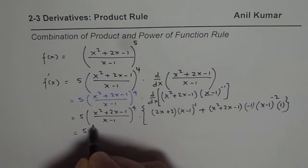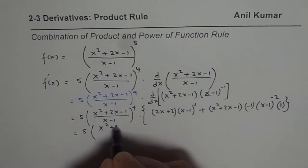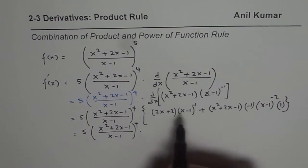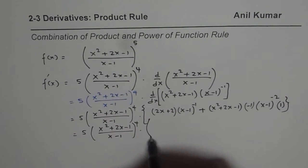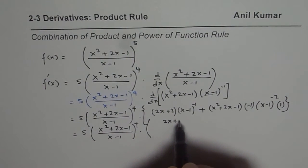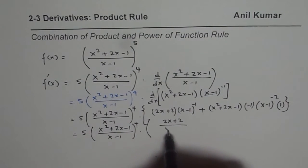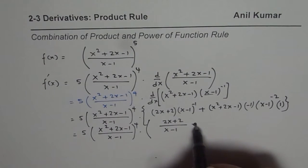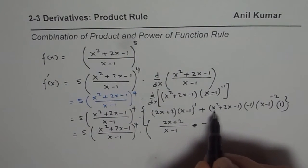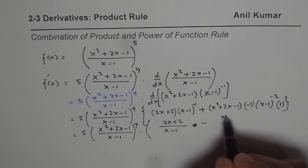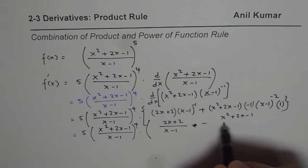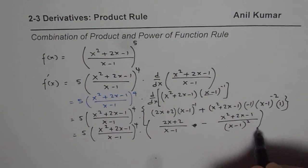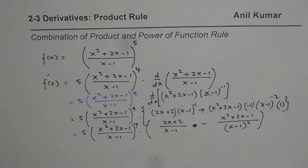Let us continue and simplify a bit. I am not going to totally simplify, but this is just to explain the concept. We can rewrite this as: 2x plus 2 divided by x minus 1, minus x squared plus 2x minus 1 divided by the square of x minus 1. That is the solution for the given question.